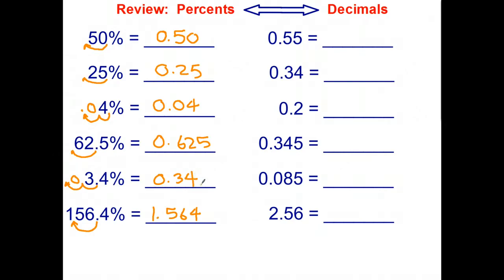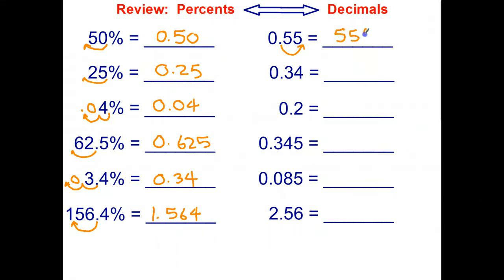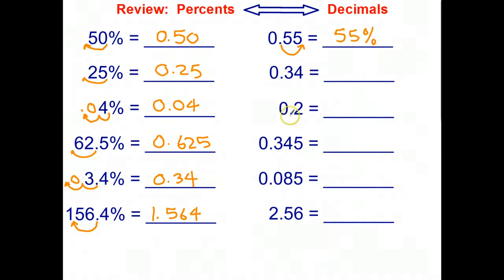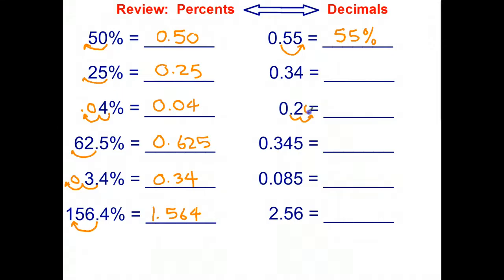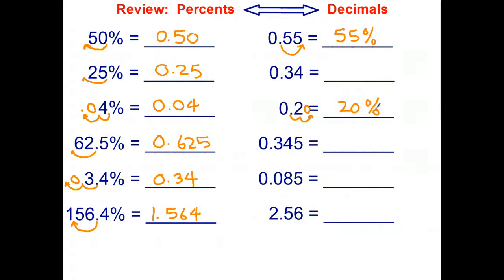Going back the other way: if we have a decimal such as 0.55, we move the decimal point two places to the right to get 55 percent. If we've got the decimal 0.2, I move it two places to the right — again I need a zero to hold the place — and that gives me 20 percent. Okay, stop the video and do the next four questions, then restart to check your answers.